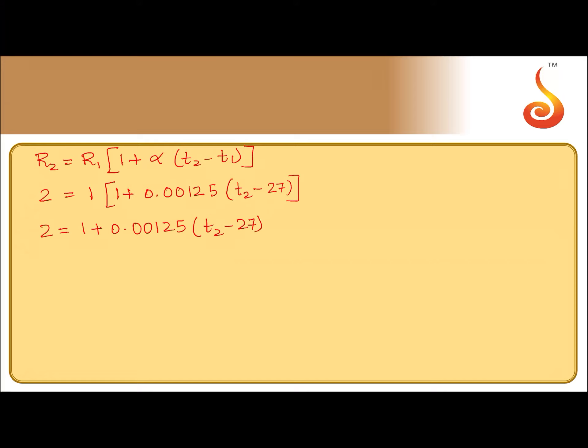Send this one to other side. T2 minus 27 into 0.00125 is equal to 1 divided by 0.00125. So this turns out to be 800. So T2 minus 27 is equal to 800. T2 is equal to 827 degree Celsius.